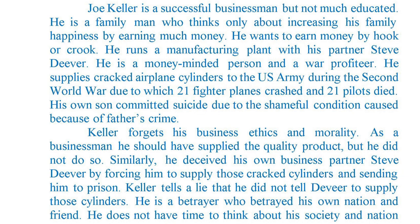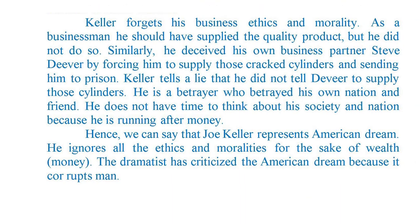Joe Keller is a successful businessman, but not much educated. He is a family man who thinks only about increasing his family's happiness by earning much money. He wants to earn money by hook or crook. He runs a manufacturing plant with his partner Steve Diva. He is a money-minded person and a war profiteer. He supplies cracked airplane cylinders to the U.S. Army during the Second World War, due to which 21 fighter planes crashed and 21 pilots died. His own son committed suicide due to the shameful condition caused by his father's crime. Keller forgets his business ethics and morality — as a businessman he should have supplied quality products, but he did not. He also deceived his business partner Steve Diva by forcing him to supply those cracked cylinders and sending him to prison, then lying that he never told Diva to supply those cylinders. He is a betrayer who betrayed his own nation and friend. He does not have time to think about society and nation because he is running after money.